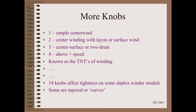Adding more knobs does not necessarily make life better. As we discussed in Module 20 of Web 101, the different winding classes can have one to four knobs. These knobs are known as the TNTs of winding. Unfortunately, these knobs cost money — but I am not talking about the cost to purchase, which you only pay for once. What I am talking about is the cost of complexity that you will pay forever. There are some designs of duplex winders that have as many as 14 knobs or adjustments that affect the tightness of winding rolls. To make matters worse, some of those are tapered or have curves as a function of current wound roll diameter, rather than being simple set points. The question I ask in my web class is: how many knobs do you want to give the night crew? The answers I usually get are zero or one.